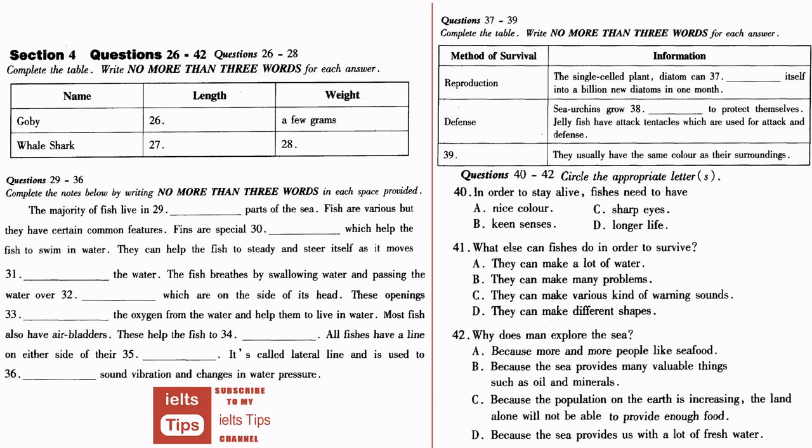Although fish are so different, they have certain common features. All of them have special organs that help them to live in water. These special organs are fins and gills. The fins help the fish to swim in water. They also help the fish to steady and steer itself as it moves through the water. The gills are comb-like structures on either side of its head. The fish breathes by swallowing water and passing the water over the gills. The gills absorb the oxygen from the water. The water then comes out of the openings on the side of its head. These openings have covers, called gill covers, over them. Most fish also have air bladders. These help the fish to float. All fish have a line on either side of their bodies. It is called the lateral line and is used to detect sound vibrations and changes in water pressure.